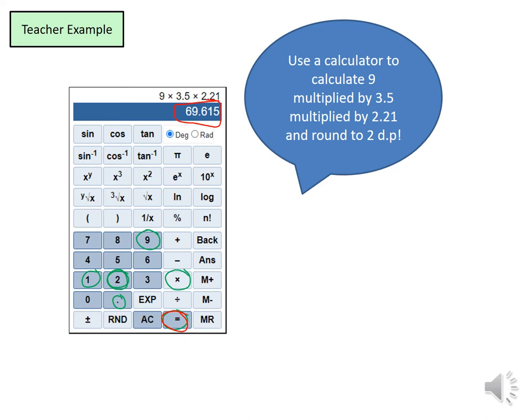I'm going to put a line here and I need to round it to two decimal places. So because that 5 is a 5 and above, the 1 will round to a 2. And that becomes 69.62.